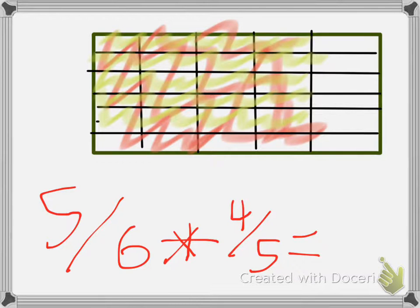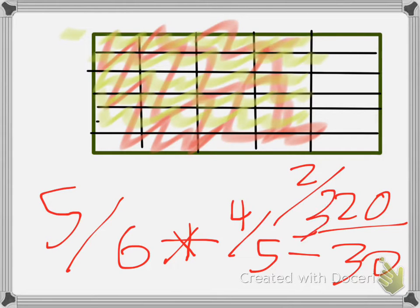Now, let's see how many of the total that is. 1, 2, 3, 4, 5... So, the total is 20 thirtieths, or also 2 thirds.